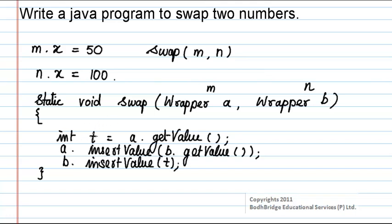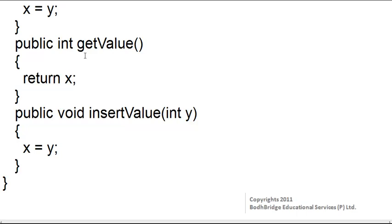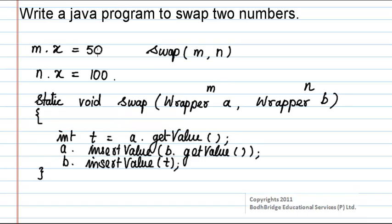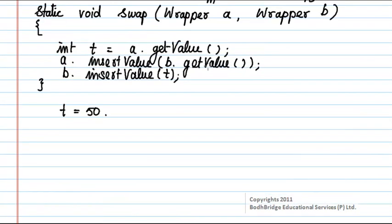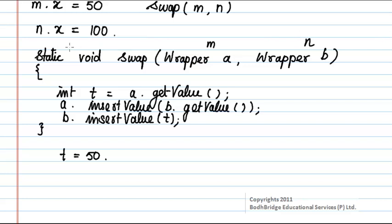Within the swap method, variable t is given the value of a.getValue(). The getValue function returns the value of x, and for object m the value of x is 50, so t will be equal to 50. In the next statement, a.insertValue(b.getValue()) is called. The getValue function returns n.x which is 100, so a.insertValue(100) is executed.